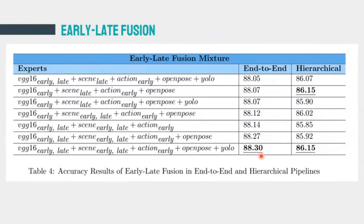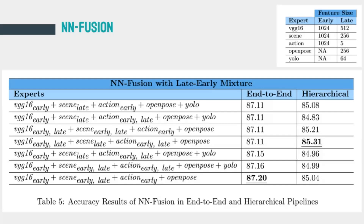These are the results for the neural network fusion paradigm. The neural network layer sizes per expert are shown in the table. The best-performing NN fusion of early and late features uses VGG16, scene, action, and OpenPose experts with the end-to-end pipeline, scoring 87.2%. The best hierarchical accuracy is 85.31%. Notably, this end-to-end accuracy is very close to the early end-to-end accuracy of 87.58% using three experts, even though feature dimensionality here is approximately equal to one early expert only — attributed to the neural network layers optimizing each expert's contribution.